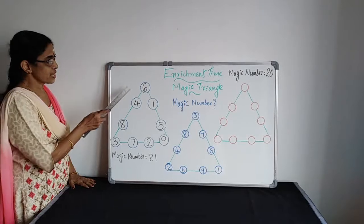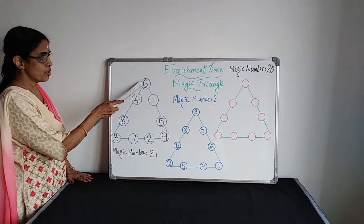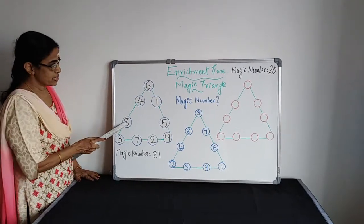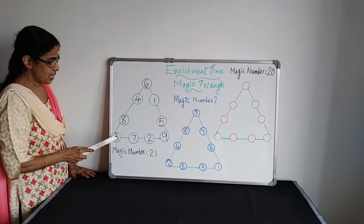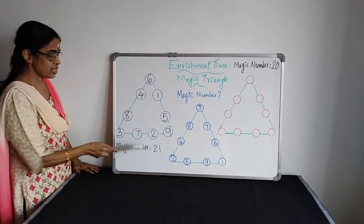Look at the sides. There are three sides for a triangle. We will see the total sum of each side. 6 plus 4, 10. 10 plus 8, 18. 18 plus 3, 21. The sum of the first side, 21.